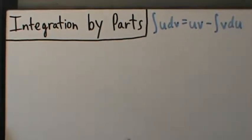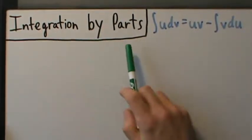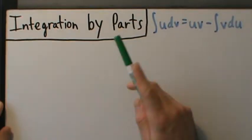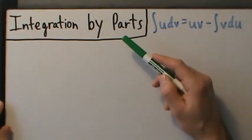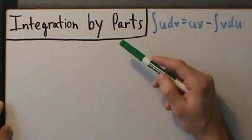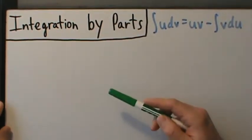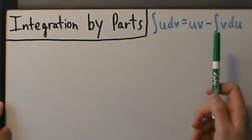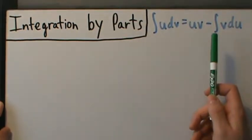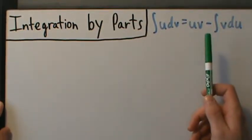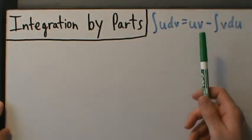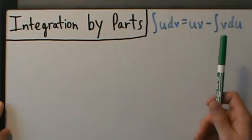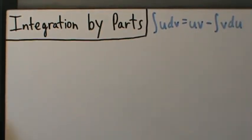In this video we're going to start talking about integration by parts. What we're going to do is explain where the formula comes from, and then in the next video we'll talk about how to use this formula with an example, and after that we'll talk about some more stuff with integration by parts and do some more examples.